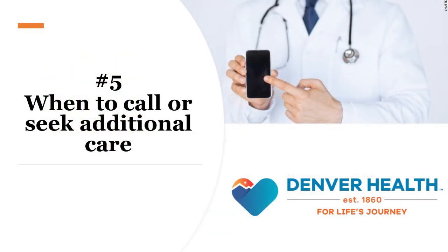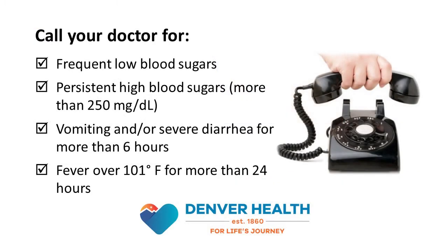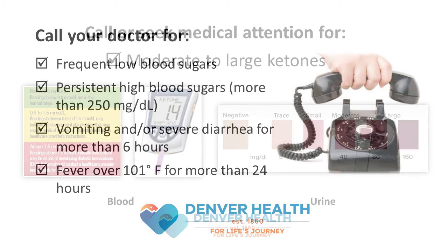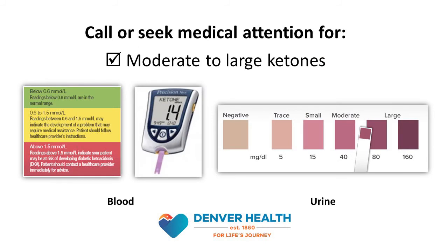5. When you're sick, it's important to know when to call the doctor or seek additional care. Call or get help if you have blood sugar levels less than 70 twice in one day, have blood sugar levels over 250 for two checks in a row that are not responding to increased insulin or fluids, if you're vomiting or have severe diarrhea for more than six hours, or if you have a fever of 101 degrees or higher for more than 24 hours. If you are checking for ketones, seek additional care if you have moderate to large ketones in your urine or blood. If checking with urine strips, the darker colors on the color change bar indicate moderate to large ketones. If checking blood ketones with a machine, anything over 1.5 also indicates moderate to large ketones.